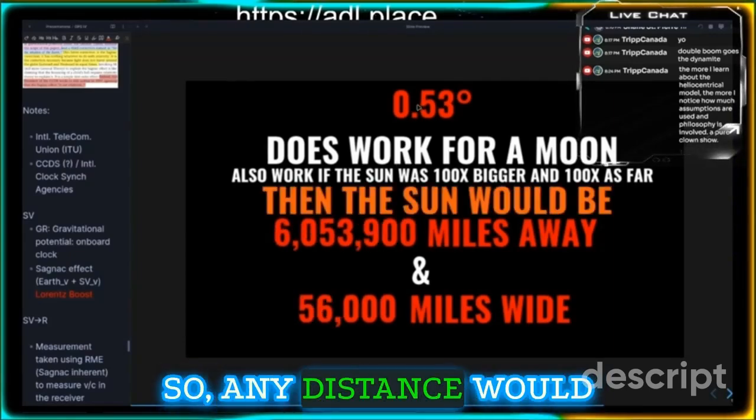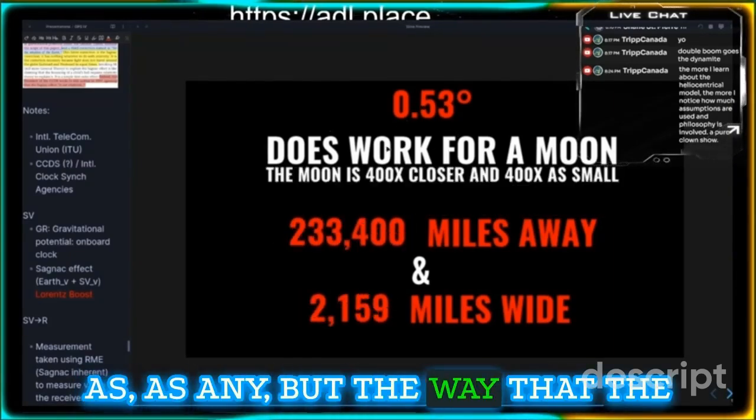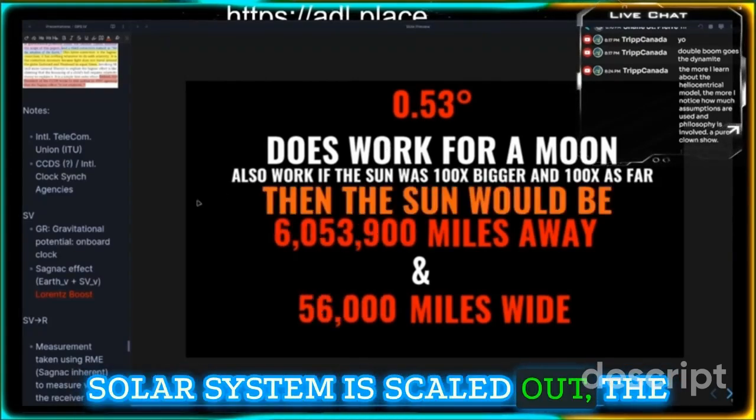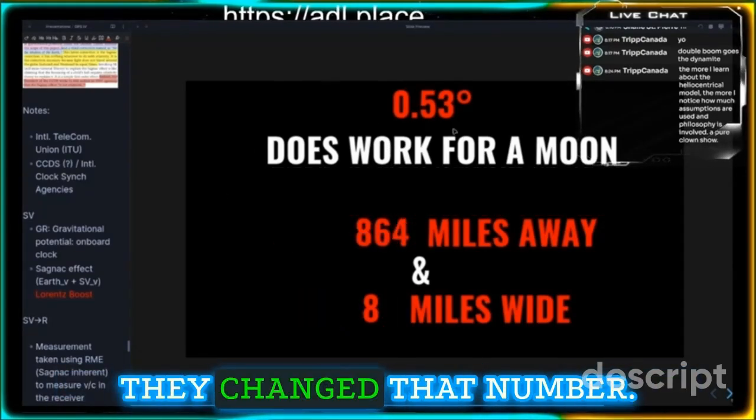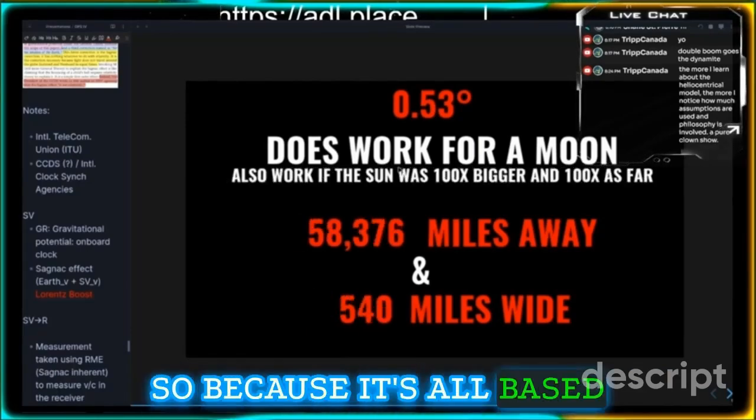So any distance would be just as good as any. But the way that the solar system is scaled out, the way that they've built the model, if they changed that number, everything else would have to change, because it's all based on the periodicity.